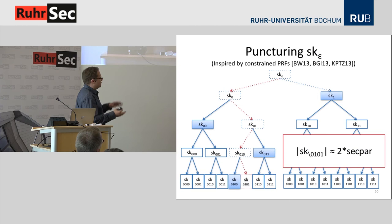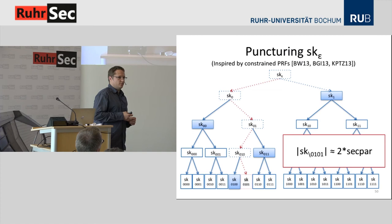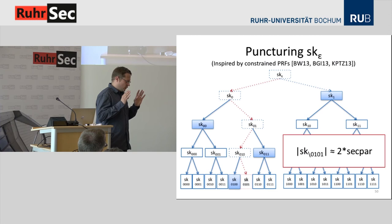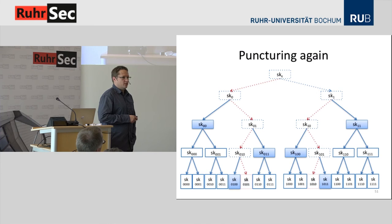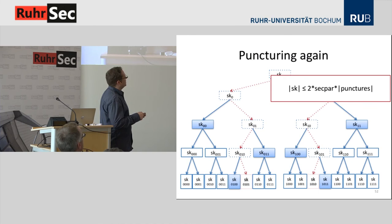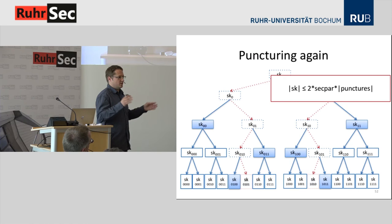How large does this secret key grow? The number of secret keys we have to store is approximately twice the security level — so 256 secret keys for 128-bit security. Of course, we can repeat this puncturing in different positions of the tree. If we do this over and over again, unfortunately we get relatively large secret keys. The upper bound on the size of secret keys is about twice the security level times the number of punctures performed. For a high-load server with many connections, this can very quickly be in the order of gigabytes.